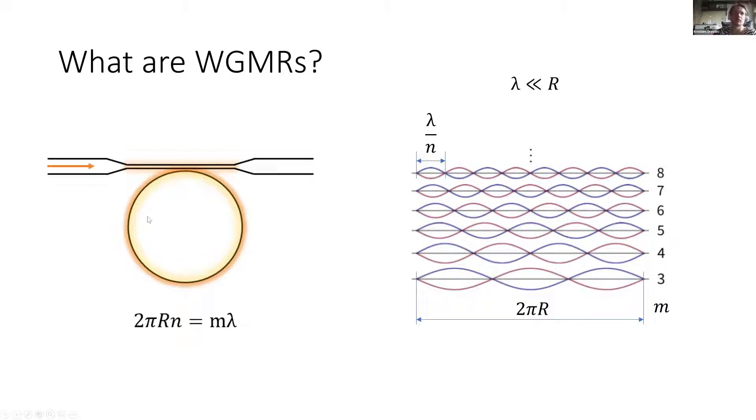Light starts circling around the perimeter of the resonator due to total internal reflection. This is the resonance formula that states when the light that has circled one round is in phase with the incoming light, then there is constructive interference and we can obtain resonance.